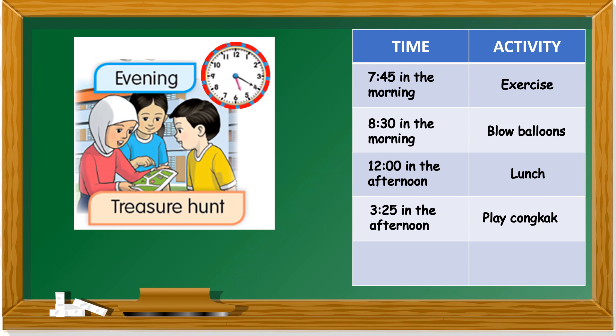Last one — what time is it? The hour hand is pointing between five and six, so it's five something. The minute hand points to four. Four times five is twenty. So it's 5:20 in the evening. What are they doing? Treasure hunt.